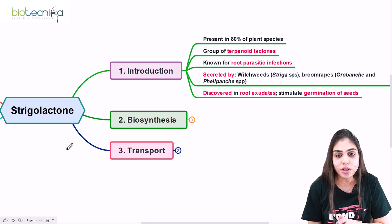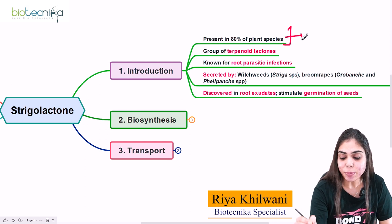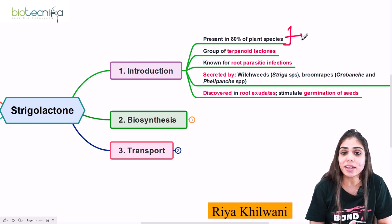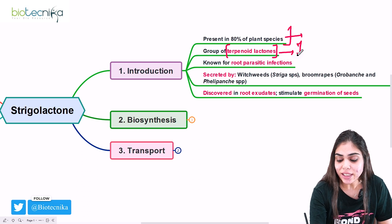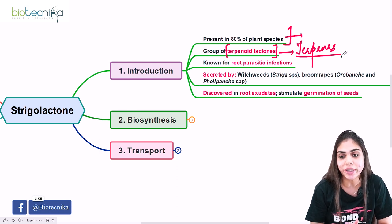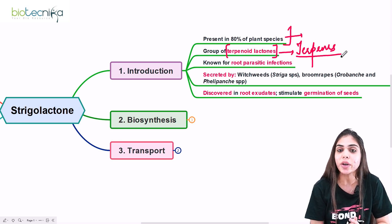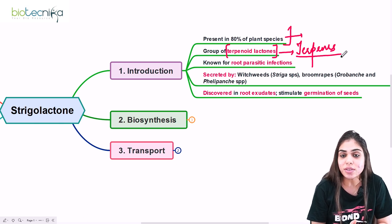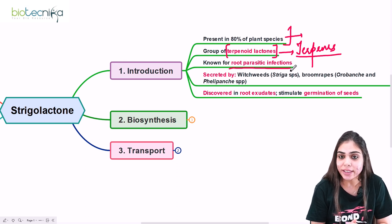Coming to the introduction of strigolactone: it is present in 80% of plant species and they are derivatives of terpenoid lactones. Terpenes are a class of secondary metabolites; when oxygenated they form terpenoids. When terpenoids are combined with a lactone compound they form terpenoid lactones, which act as precursors for the synthesis of strigolactones. They are known to infect the roots of plants — specifically known for root parasitic infections, as they reside in the roots of parasitic plants.